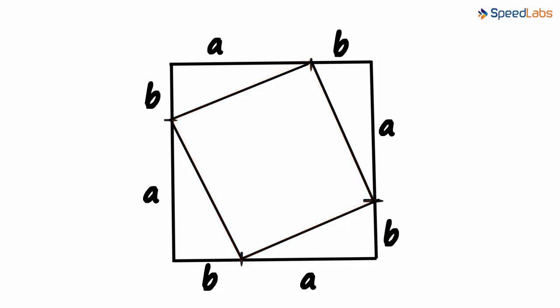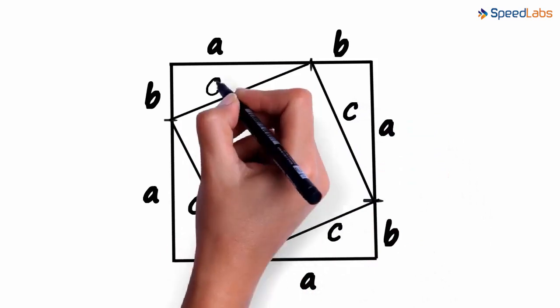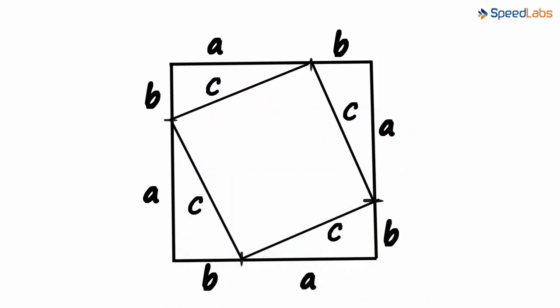Let the length of the sides be c centimeters. Look at the different parts that are formed. The outer square is made up of five parts: this square of side c centimeters in between and four right angle triangles with height a and base b.